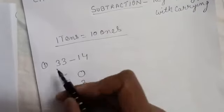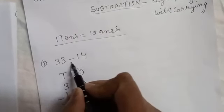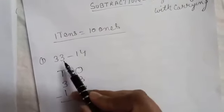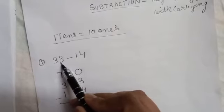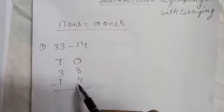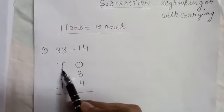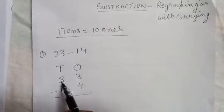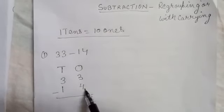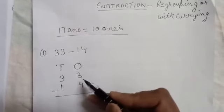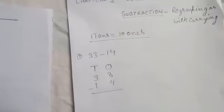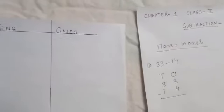The first example is 33 minus 14. We have to subtract 14 from 33. We rearrange into columns: tens and ones. So we have 33 on top and 14 below. We have 3 ones.